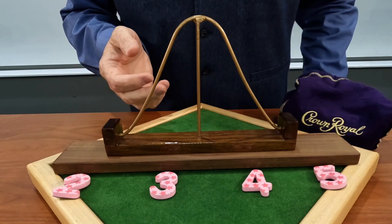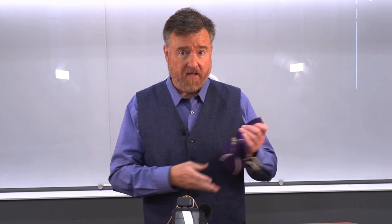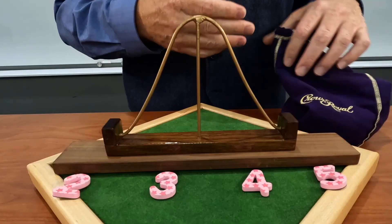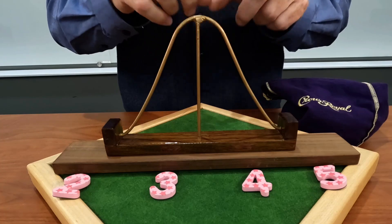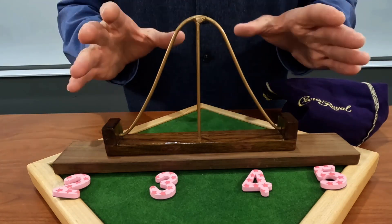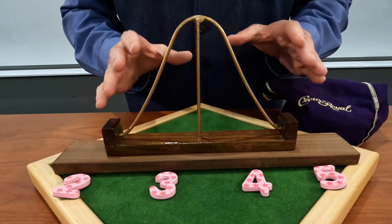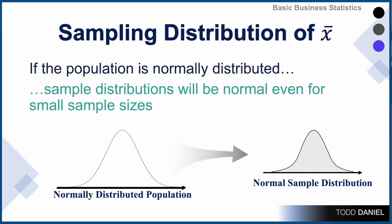And yet, the distribution of sample means from that highly skewed population is and will always be a normal distribution. If the underlying population is normal, then obviously the distribution of sample means will likewise be normal — it has to be. However, we will get a normal distribution of sample means much more quickly, or with smaller sample sizes, if the underlying population is normal.